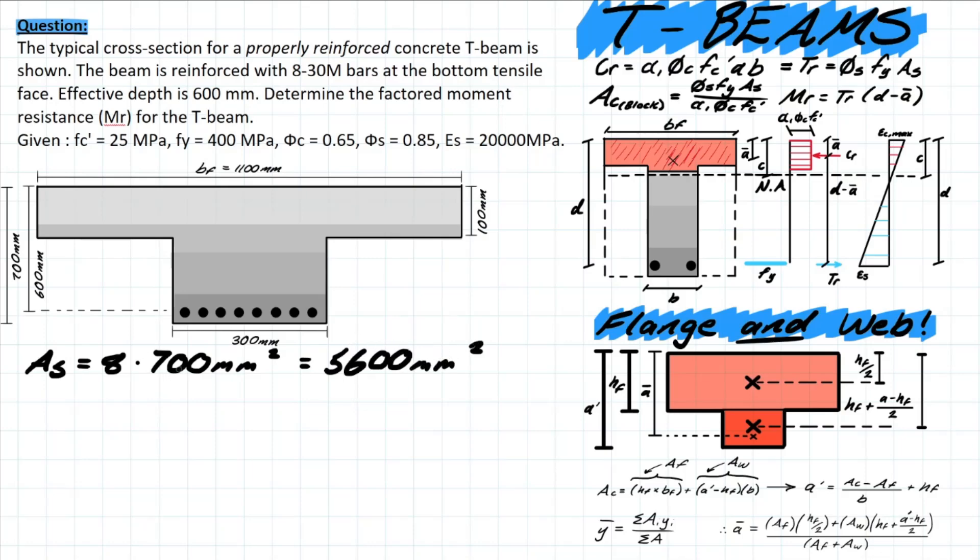Now how can we proceed? We should proceed with determining what our tensile resistance is because we have all the known design variables for this. We can then figure out what the a value would be using this TR value. So TR is φs which is 0.85 times our area of steel times our yield strength for properly reinforced members, 400, and then equals to 1904 kilonewtons.